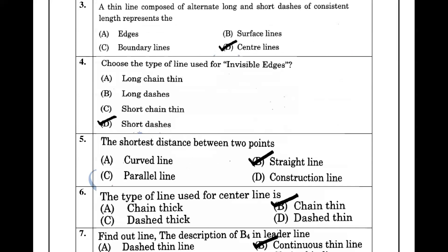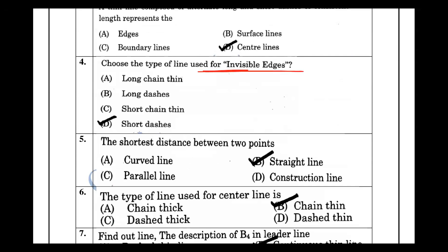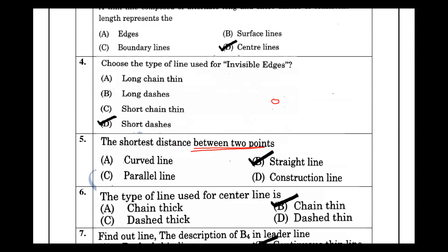The type of line used for invisible edges is the dashed line. Invisible edges are represented by short dashes. Next, the type of line used for a center line is the chain-thin line.